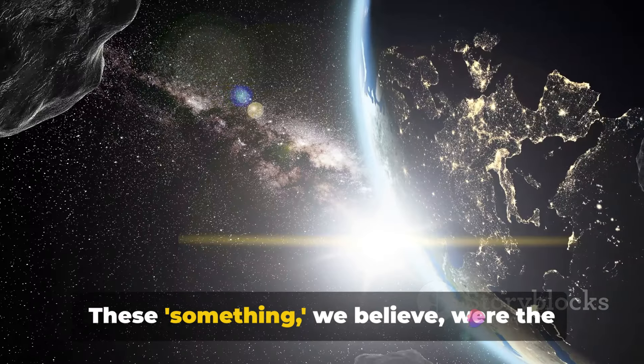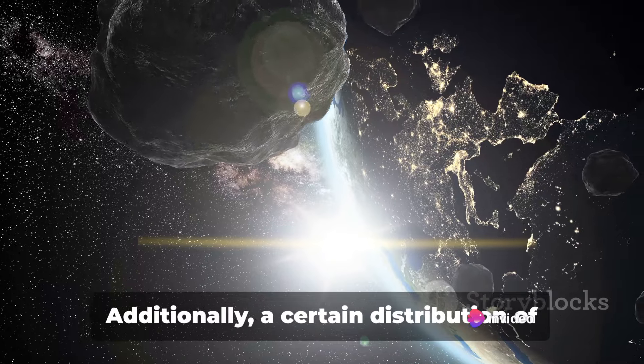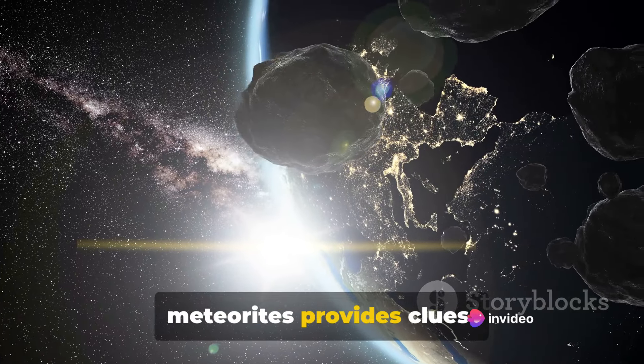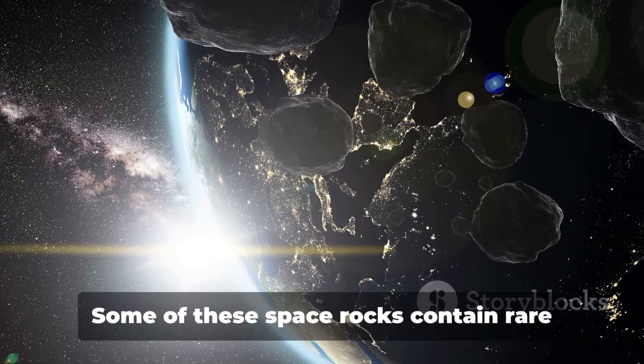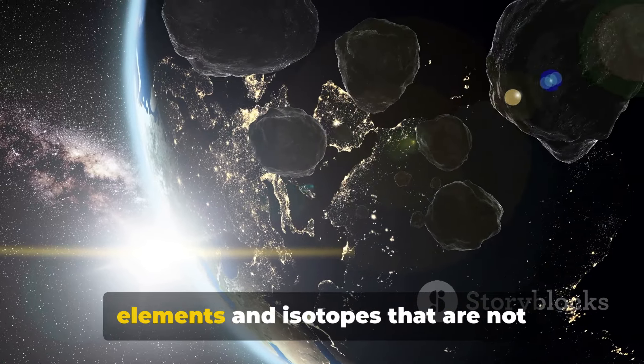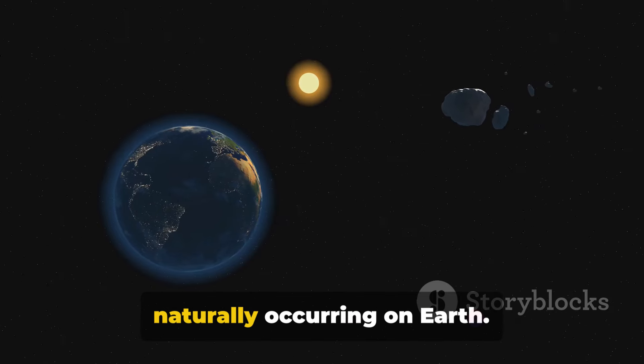These something, we believe, were the lost planets. Additionally, a certain distribution of meteorites provides clues. Meteorites are fragments of asteroids that have fallen to Earth. Some of these space rocks contain rare elements and isotopes that are not naturally occurring on Earth.